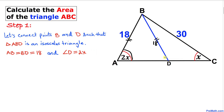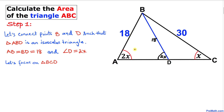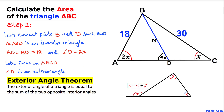Now let's focus on triangle BCD. Angle D is an exterior angle, and here's the exterior angle theorem: the exterior angle of a triangle is equal to the sum of the two opposite interior angles.